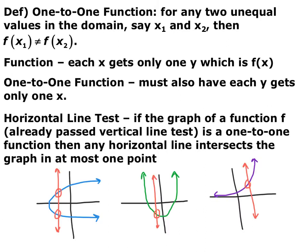For functions, we have the vertical line test, which says if you draw a vertical line anywhere on the graph, it can only cross the graph at one point because each x can only show up once. For one-to-one functions, we also have the horizontal line test — if you draw a horizontal line, each y-coordinate can only exist once, so it should only touch the graph in one place.